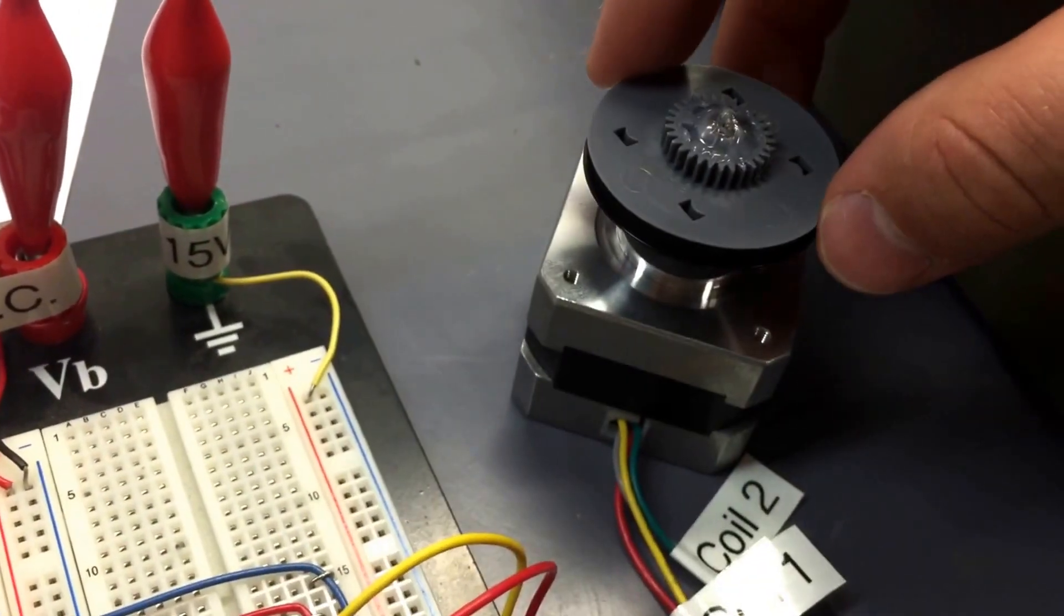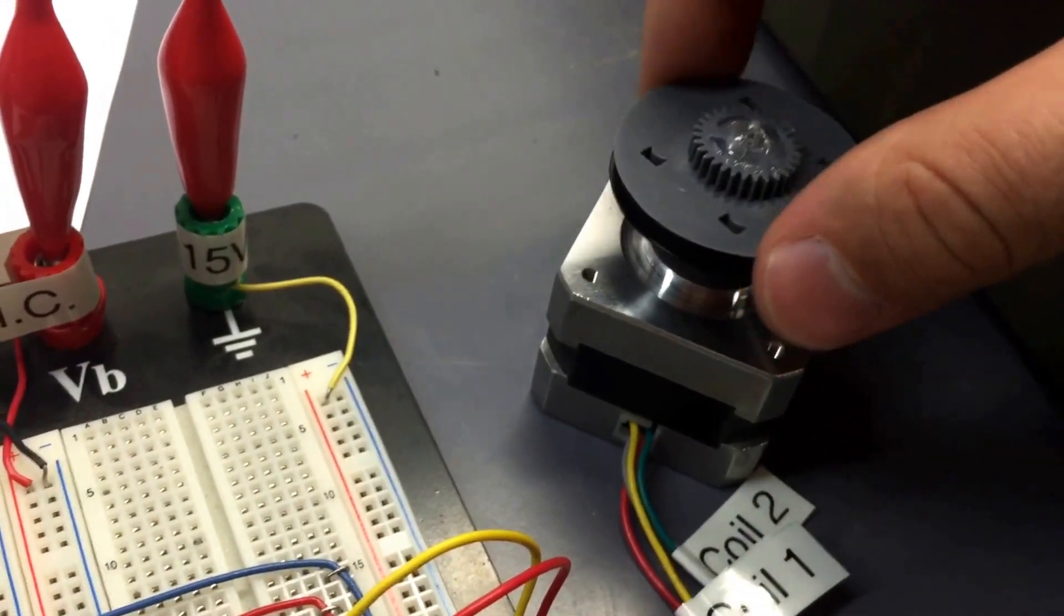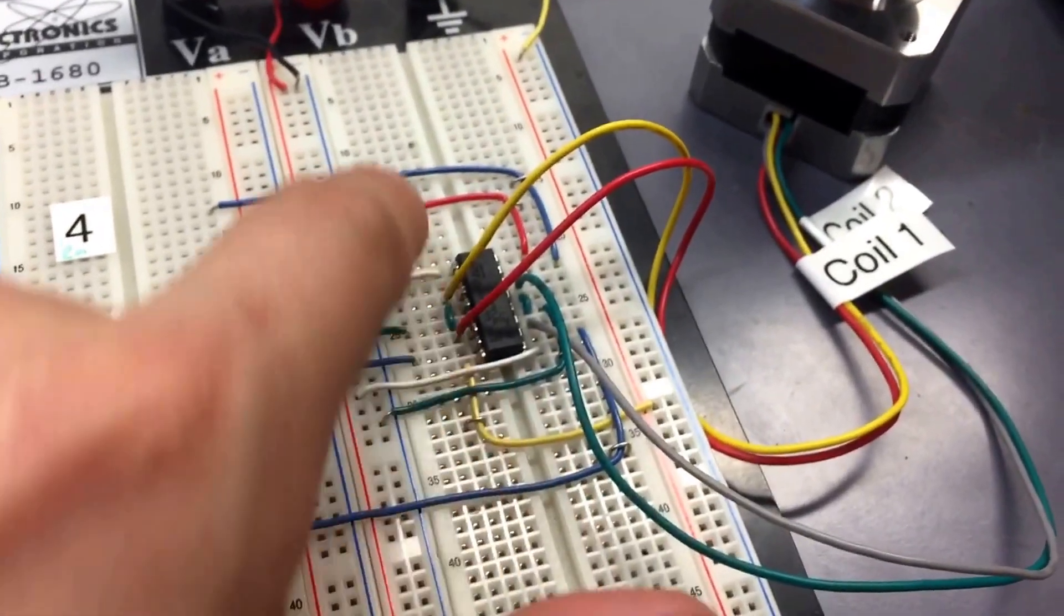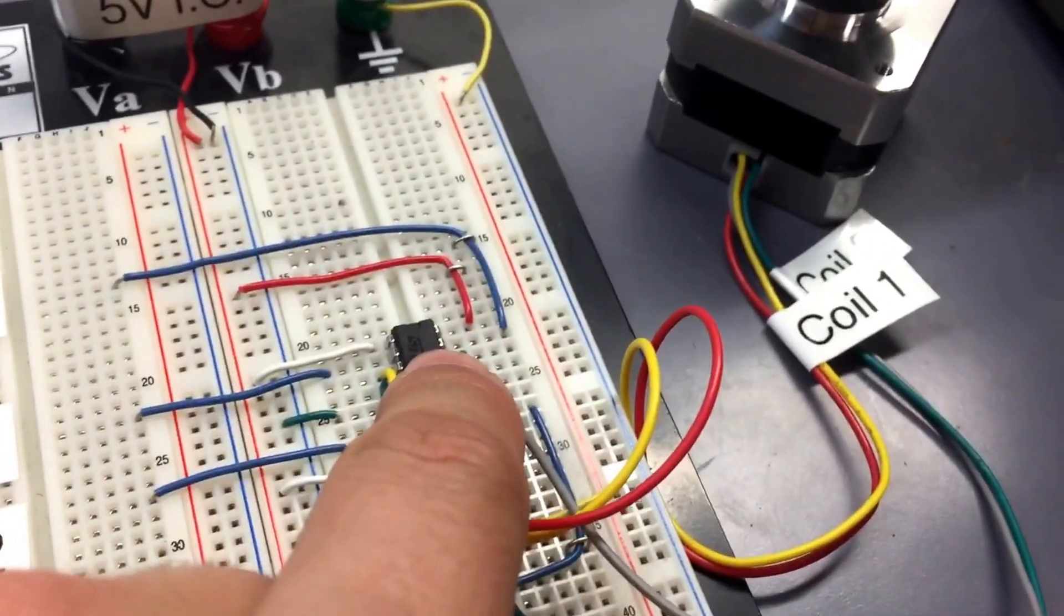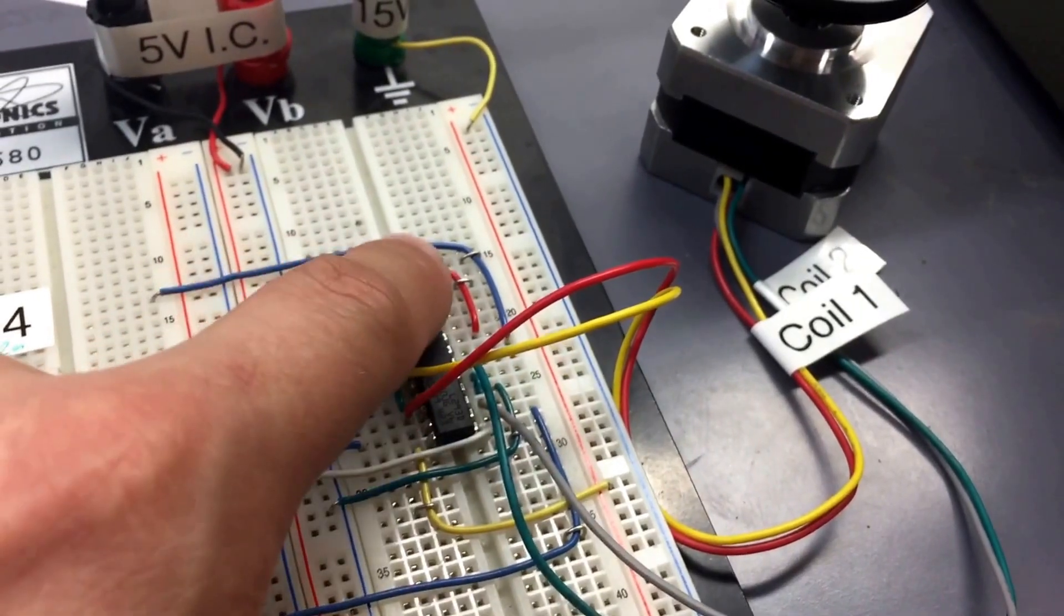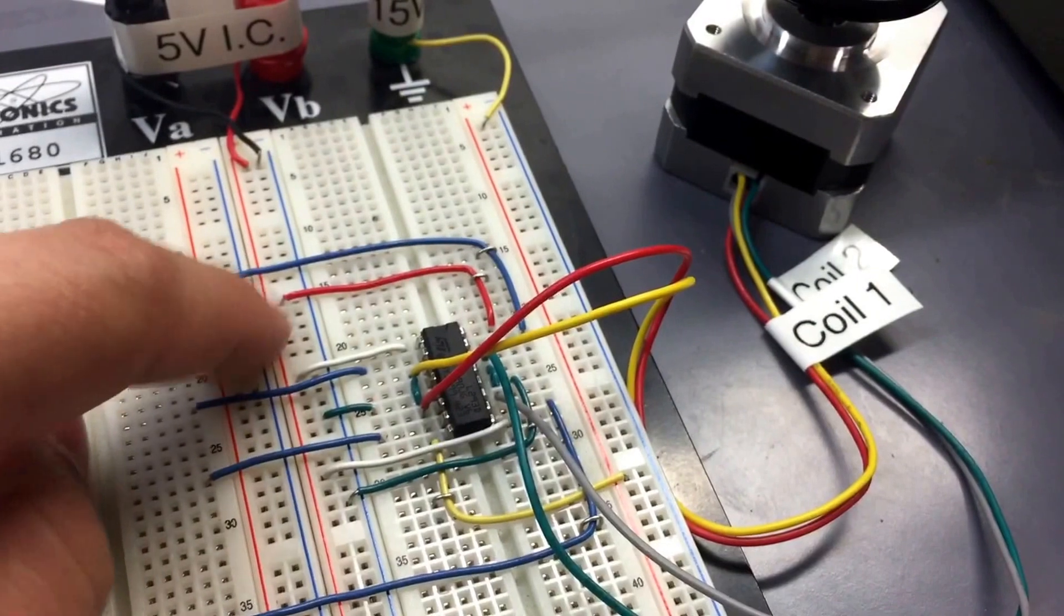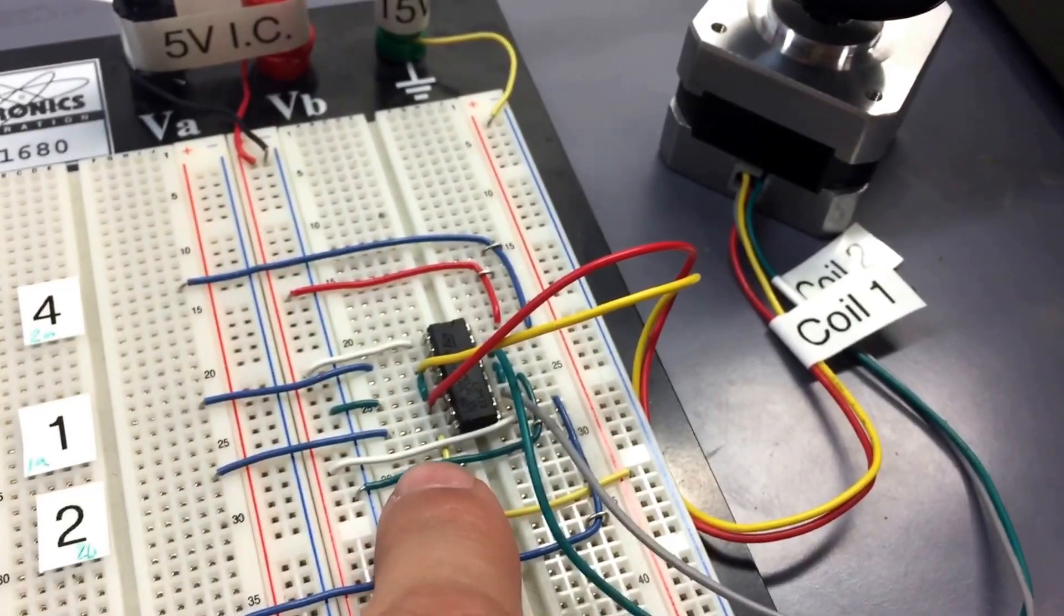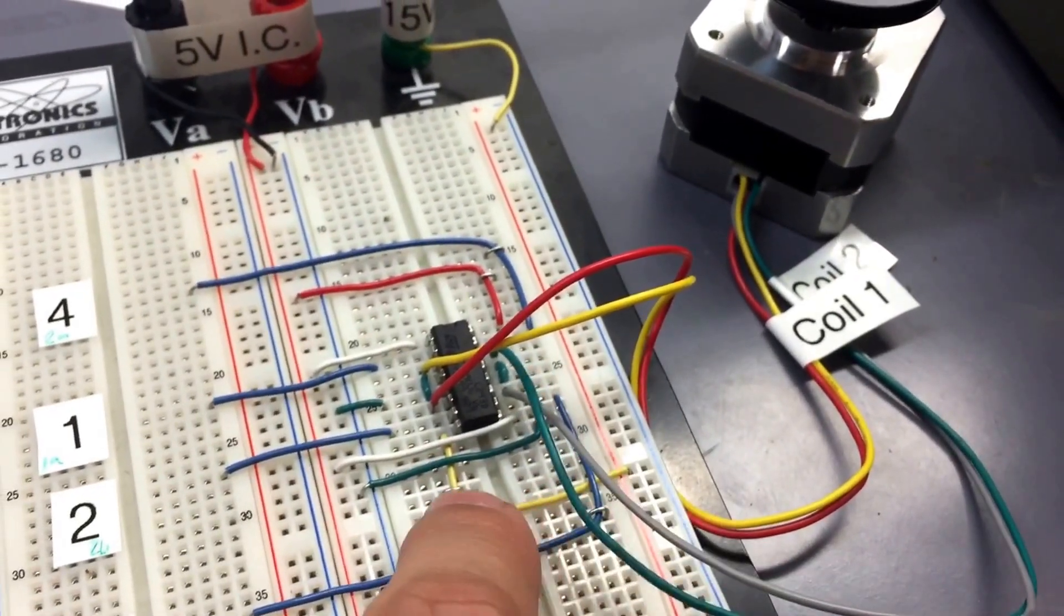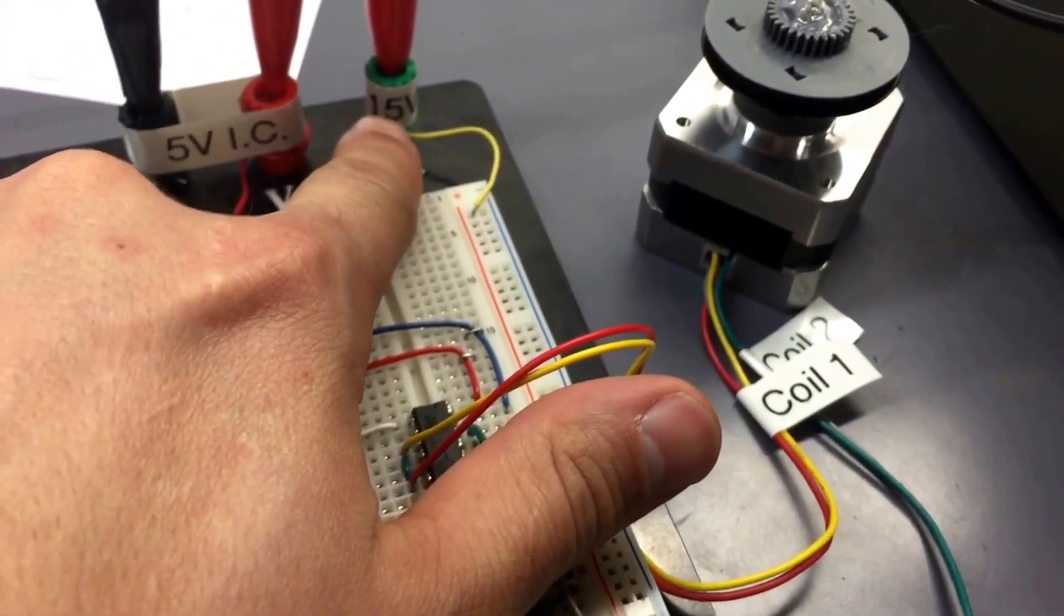The 5 volt power rail is pin number 16, and it's important of course to make sure that you really label this so you know where it's going. Because pin number 8, this yellow cord right here, corresponds to the 15 volt that I have it connected to.